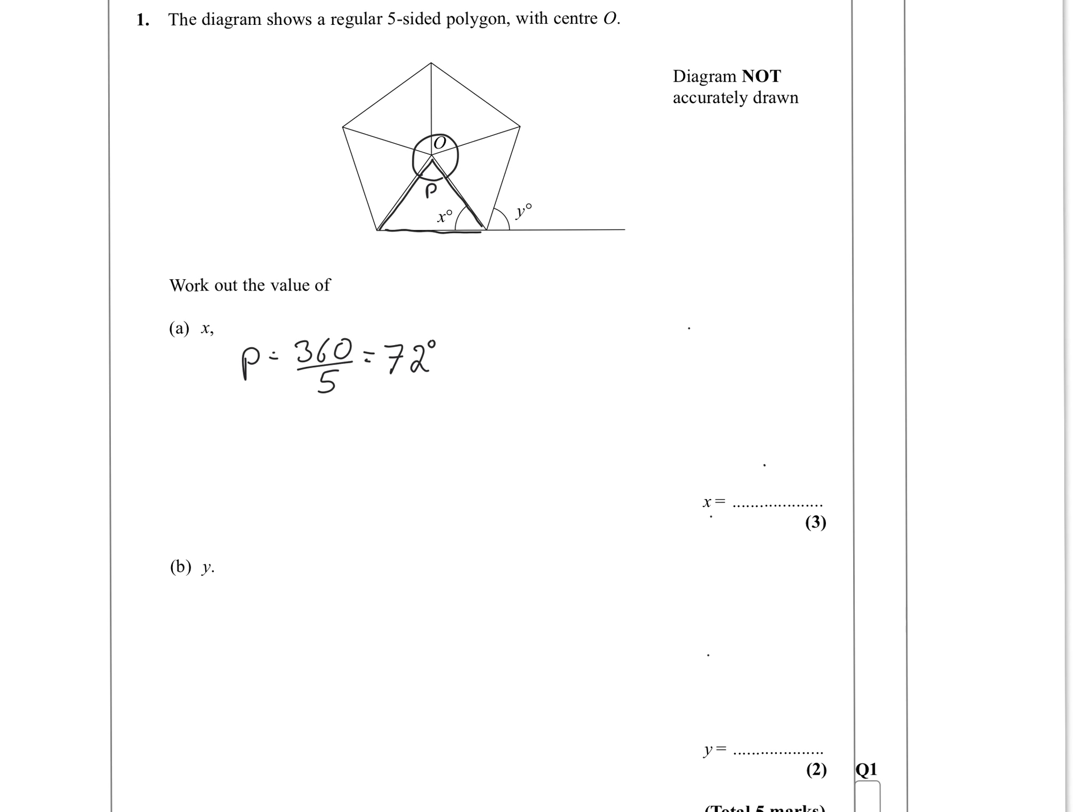And if that is 72, then X is 180 minus that 72 divided by 2. So that's 108 divided by 2, which gives us 54 degrees.